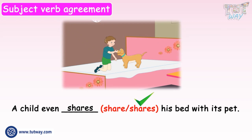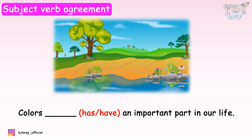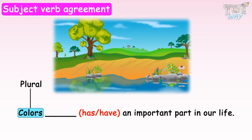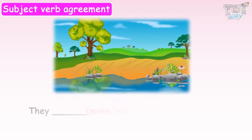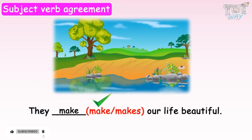Now let's fill some more blanks. Colors dash an important part in our life — has or have? Color is a plural noun, so we will use have. Colors have an important part in our life. They dash our life beautiful — make or makes? They is plural, so we will use make. They make our life beautiful.